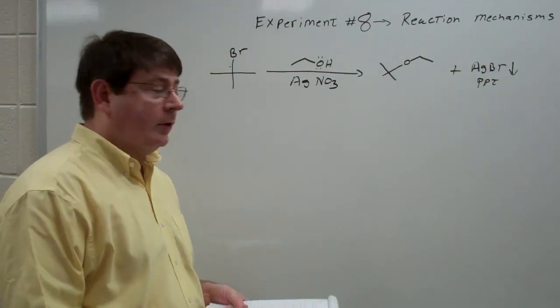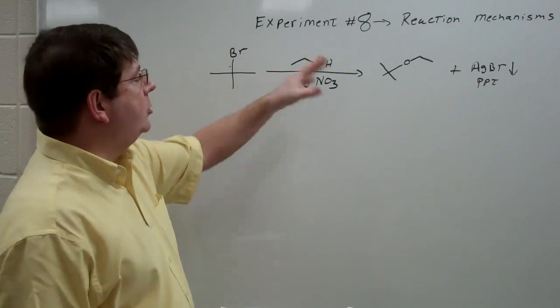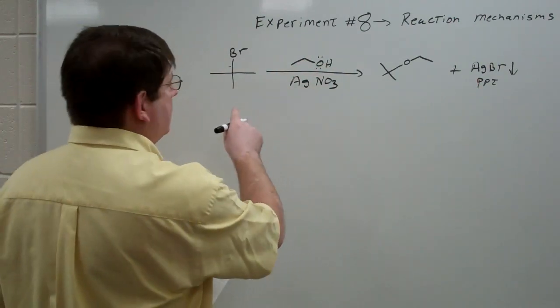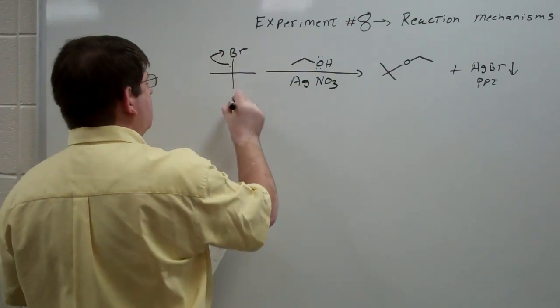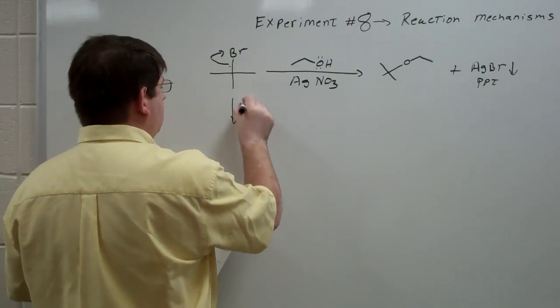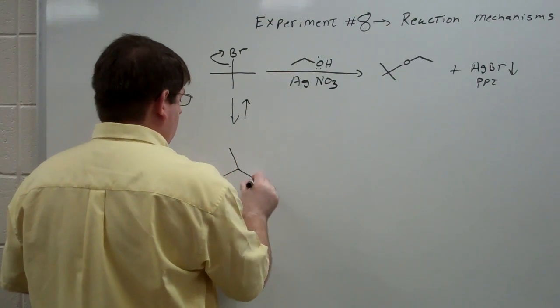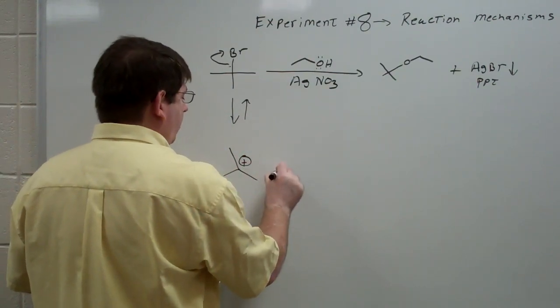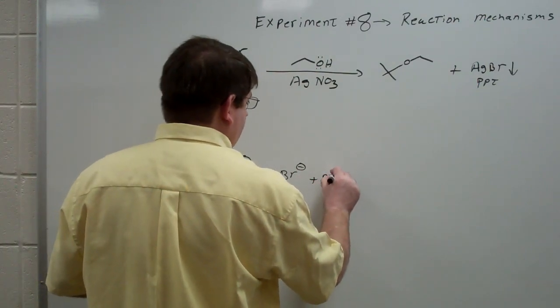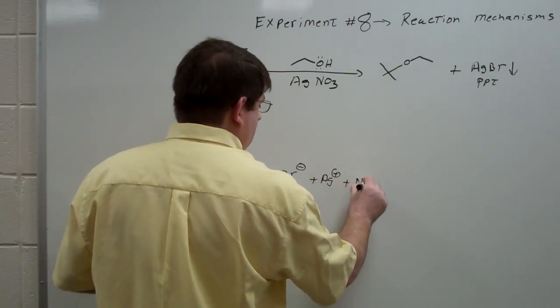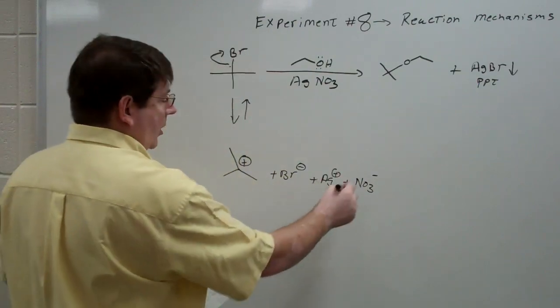So this allows you then to monitor the reaction quite easily. So what happens in this particular case, when the carbon bromine bond breaks and you get the cation plus bromide, the bromide immediately reacts with the silver because we've got silver nitrate in there, right? So we've got these ions that are present.